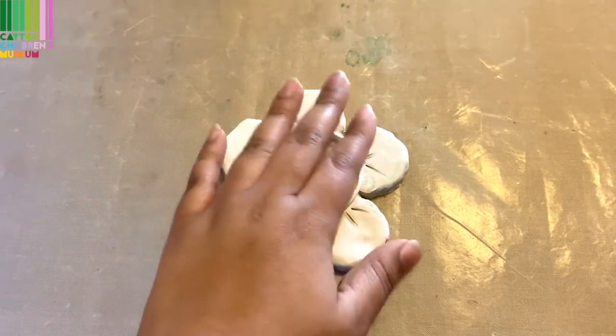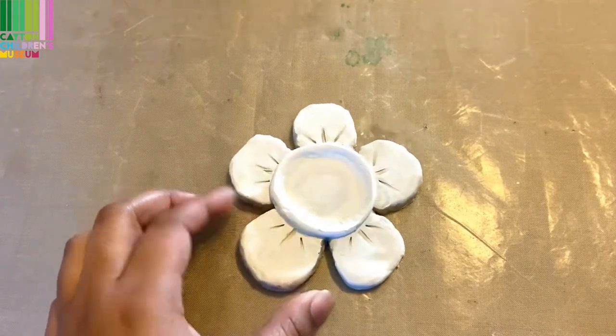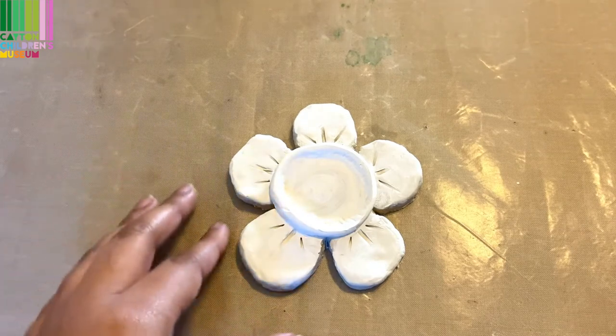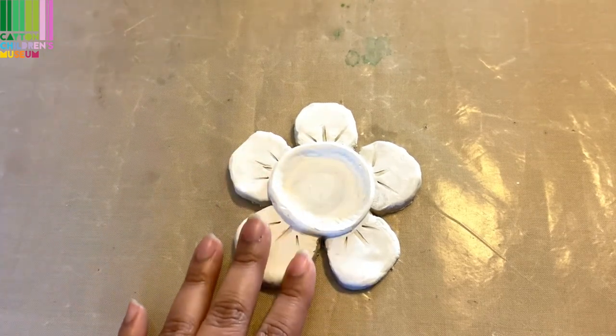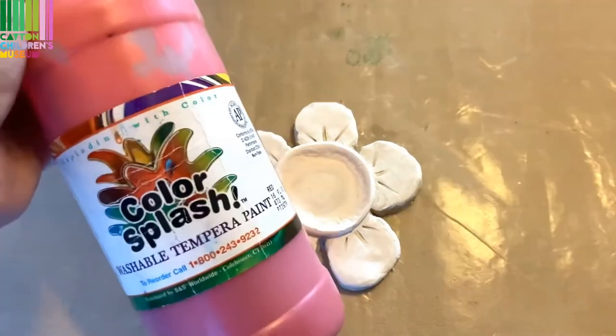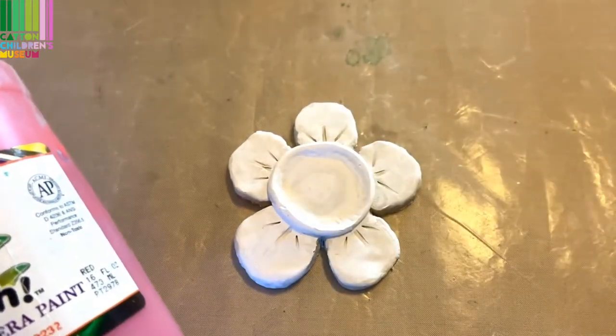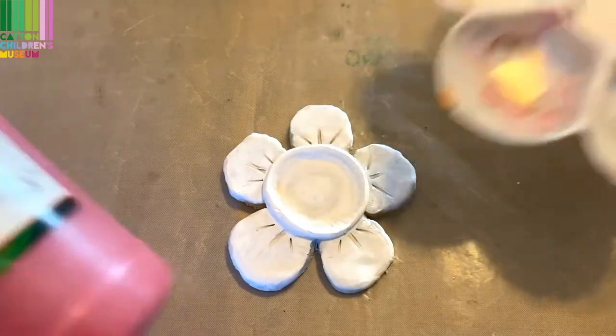Now that our tea light candle holder has dried, we'll move on to the next step. Now you can leave it like this if you want to, but I think I'll want to add some color to it. So I'm going to go ahead, grab some of my paint, grab some brushes, and grab something just to pour my paint into. And we'll start to add color to it.